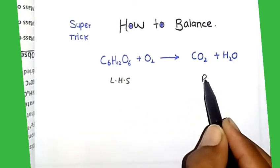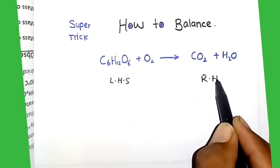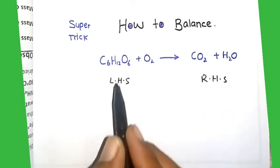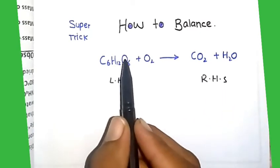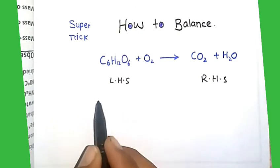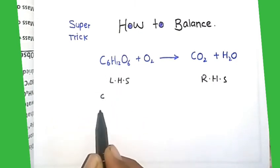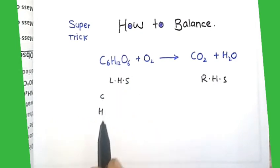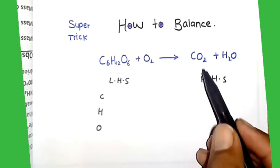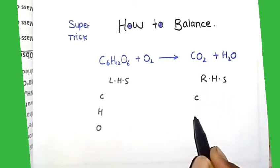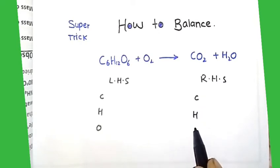And that is product, right-hand side. We write the element atoms in left-hand side. This is carbon, hydrogen, next oxygen. So here we write carbon, hydrogen, and oxygen.